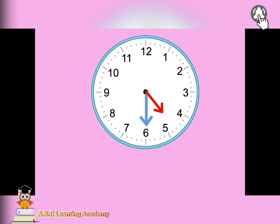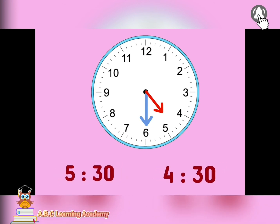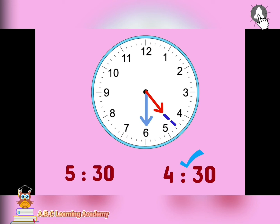Next clock. What is the time? Is it 5:30 or 4:30? The answer is 4:30. You're right. Because the hour hand is at the middle of 4 and 5 — it didn't yet reach number 5.